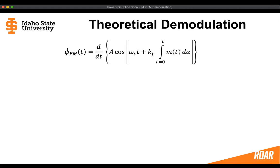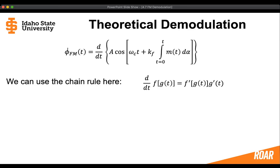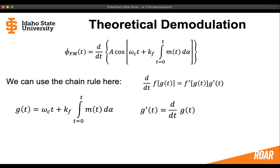If we take the differentiation of the frequency modulated signal with respect to time, we're going to need to use the chain rule. Let's identify what the functions f and g are. g is going to be the argument of the cosine, and the derivative of g is going to be the time domain derivative, which is the carrier frequency plus kf times the message. So when we take the derivative of that integral, we'll just end up with the message. And the function f is going to be A times that cosine wave.